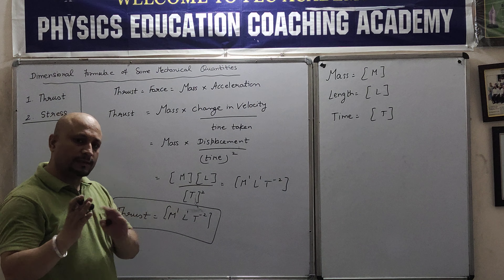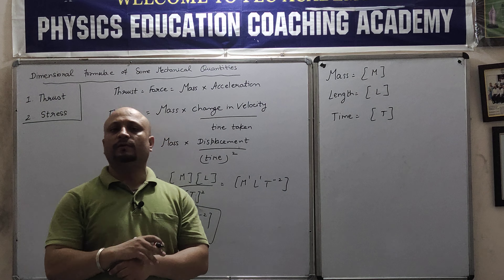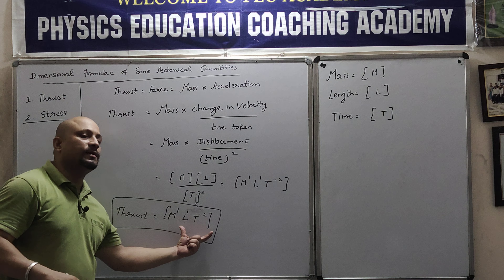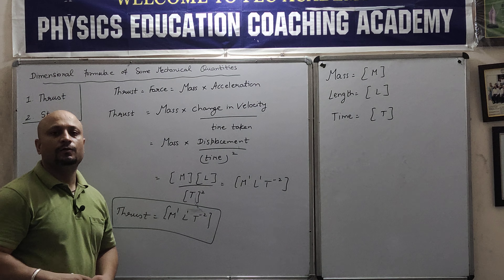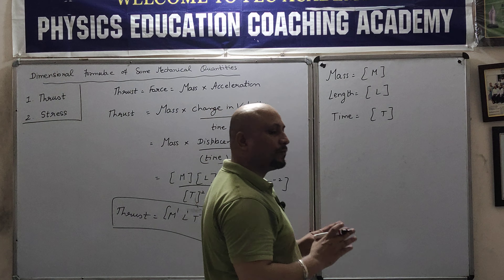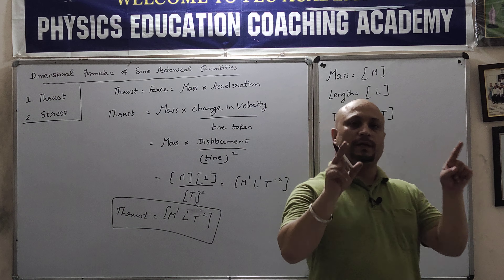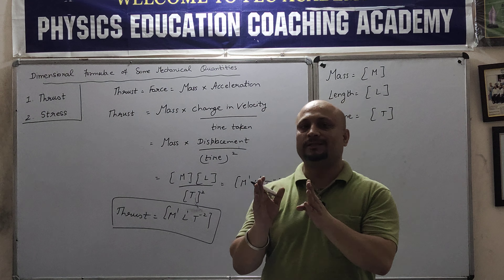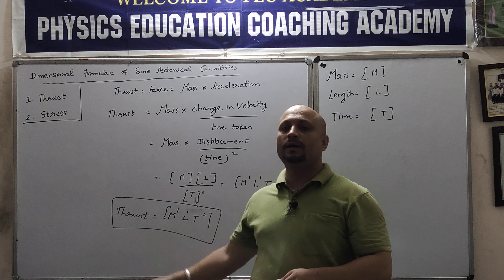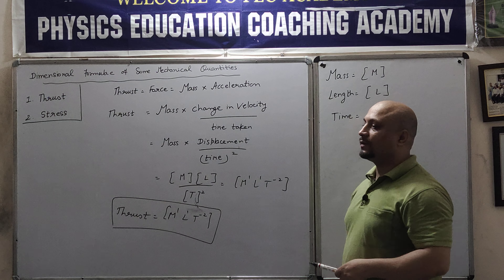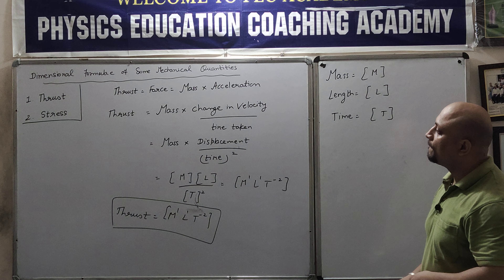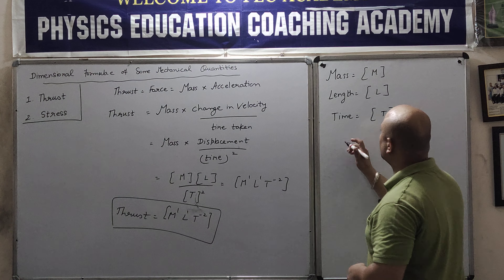Students often make a mistake — they calculate the dimensional formula but do not enclose it in brackets. Always remember: whenever you calculate the dimensional formula, you must enclose the dimension in brackets. So the dimensional formula of thrust is [M¹L¹T⁻²].